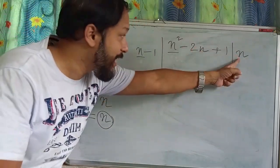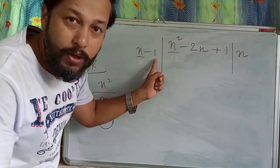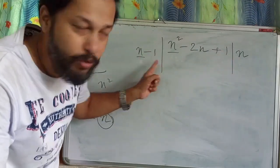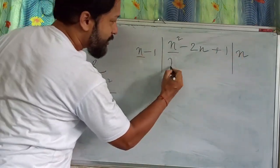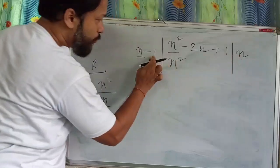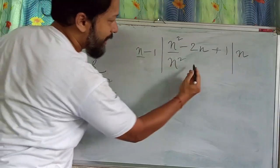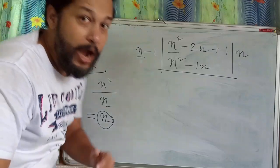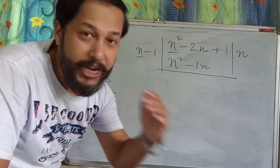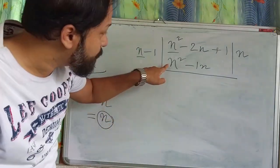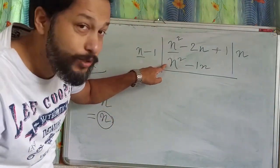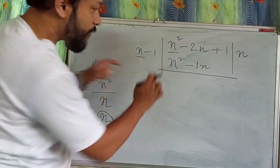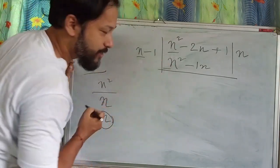Now, by this n, you have to multiply both terms of the divisor. So n into n gives n², and n into minus 1 gives minus n. Now, you have to change the sign — plus becomes minus, and minus becomes plus.